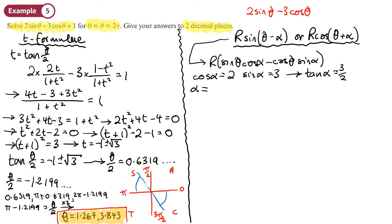If we work that out to find alpha we'll get 0.9827, and then we can find the value of r as well. R is going to be the square root of 3 squared plus 2 squared, so we get r equal to root 13. So that means that 2 sine theta minus 3 cos theta can be written instead as root 13 sine theta minus 0.9827.